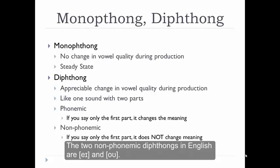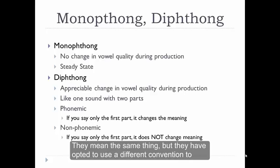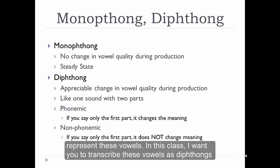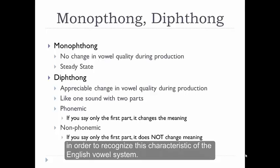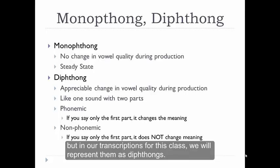The two non-phonemic diphthongs in English are A and O. You'll find some textbooks transcribing these vowels as the monophthongs A and O — they mean the same thing, but they've opted to use a different convention. In this class, I want you to transcribe these vowels as diphthongs in order to recognize this characteristic of the English vowel system. So even in the basic vowel charts I'll show you, there is some variation, but in our transcriptions for this class, we'll represent them as diphthongs.